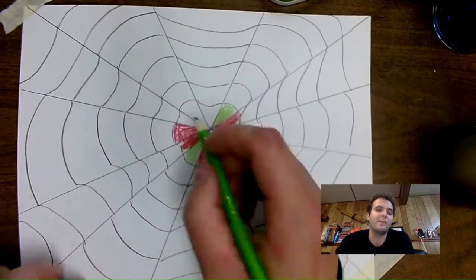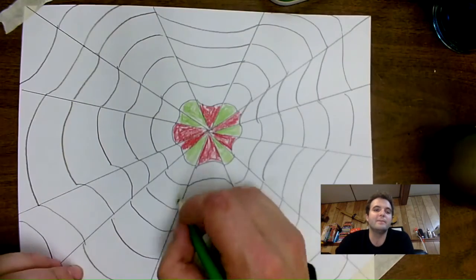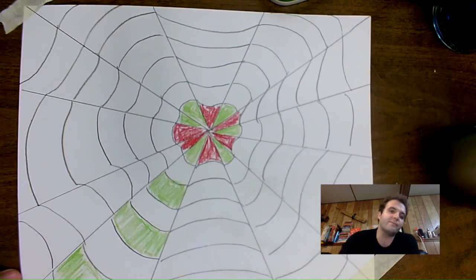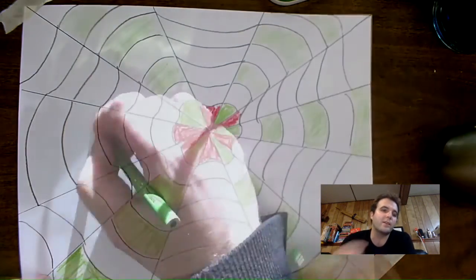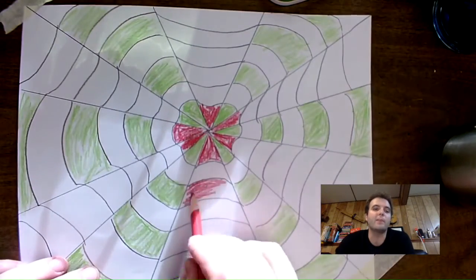Now, oops, I made a mistake, but that's okay. I hope it'll look good anyways. And you're going to take that all the way up, but you're going to skip one. So you color green, leave a white space, color green, leave a white space, color green, leave a white space all the way up.